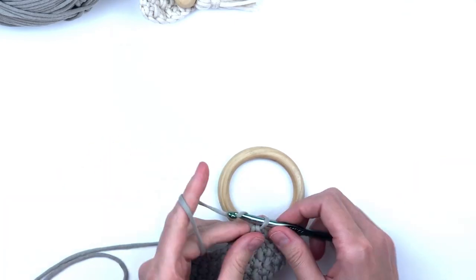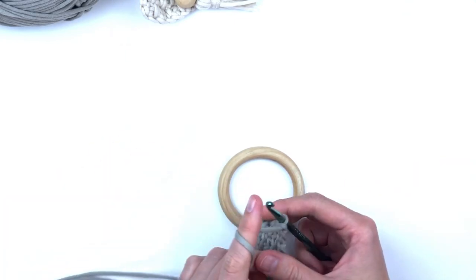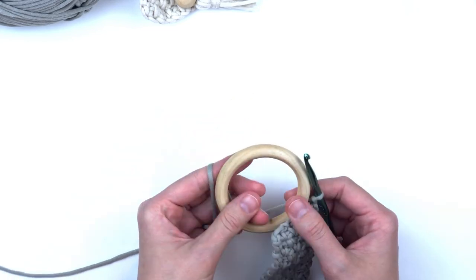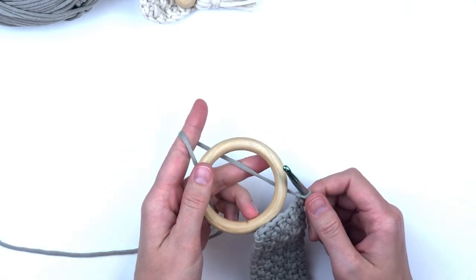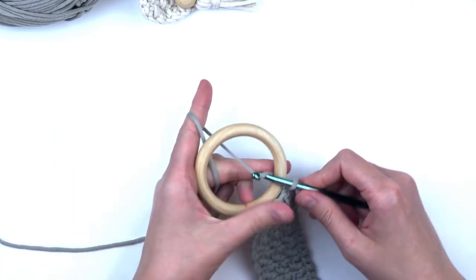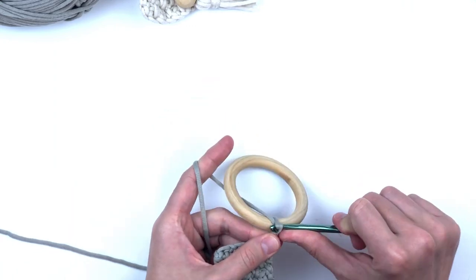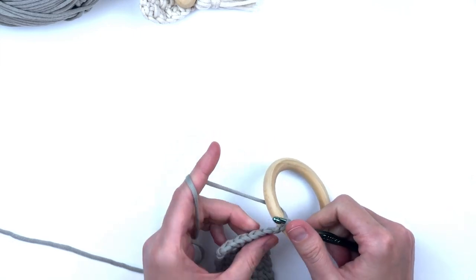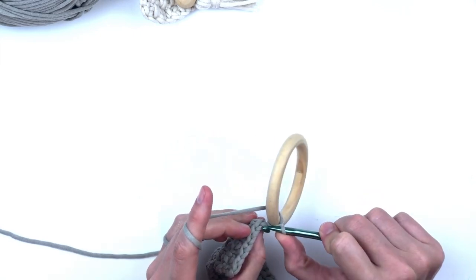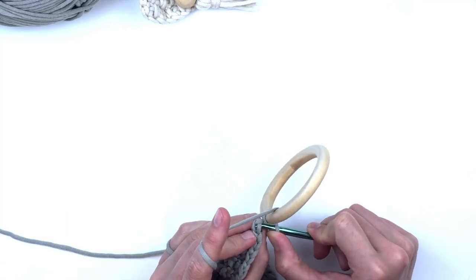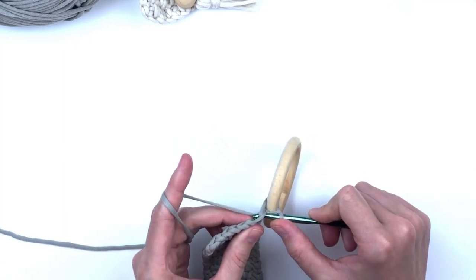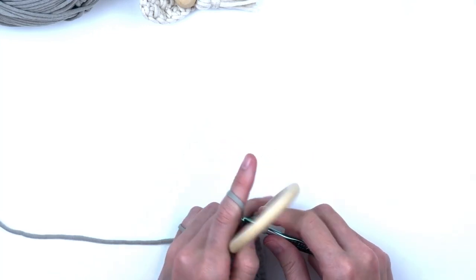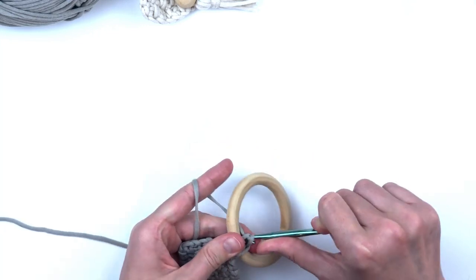Now we will begin to add the wooden ring. Chain one and turn. Take your wooden ring and place it between your working yarn and your hook. Put your hook through the ring and pull through a loop. We're essentially slip stitching. Move the ring out of the way and turn your work to where you can see the stitches. Put your hook through the front loop only. Draw up a loop. Move the ring back between your working yarn and your hook and draw through both loops on your hook.